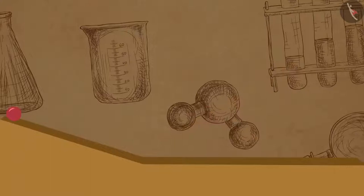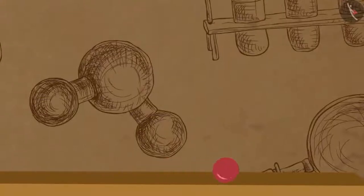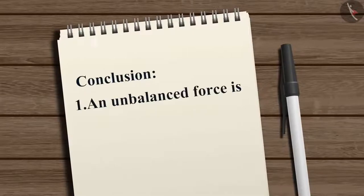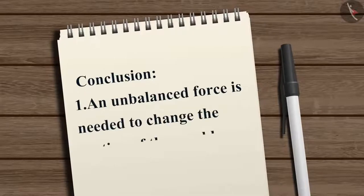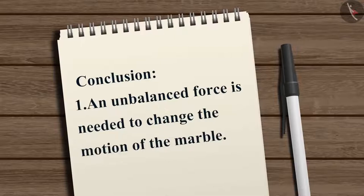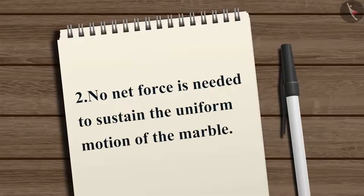If the slope is ultimately reduced to zero, then the marble will move forever to reach the height from where it was released. In this case, the unbalanced forces working on the marble is zero. Hence we can say an unbalanced force is needed to change the motion of the marble, but no net force is needed to sustain the uniform motion of the marble.